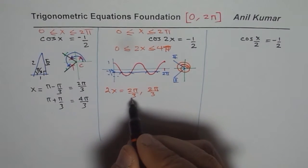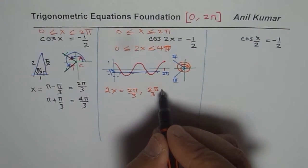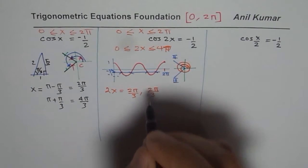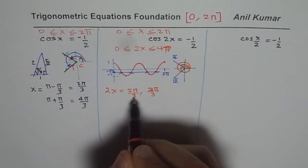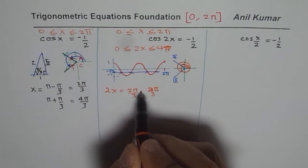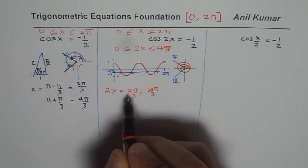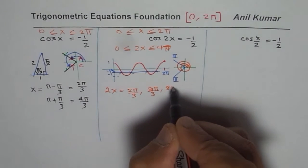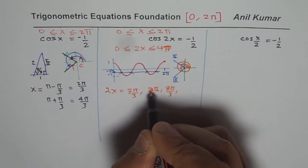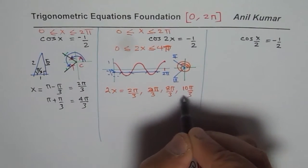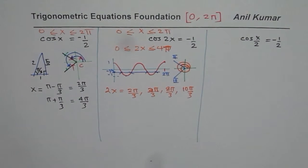Adding 2π means, when I add 2π to it, this was 4π by 3. When you add 2π to this, 3 times 2 is 6, 6 plus 2 is 8, so you get 8π by 3. In this case, 6 plus 4 is 10, so you get 10π by 3. Those are the solutions.